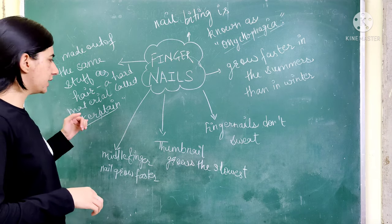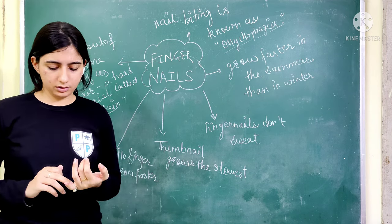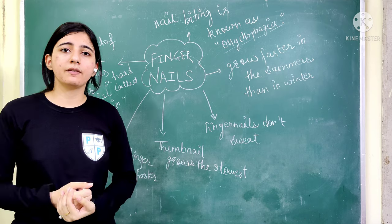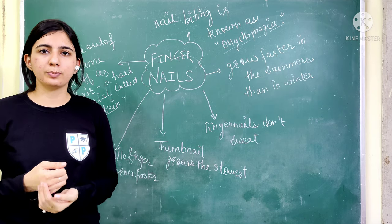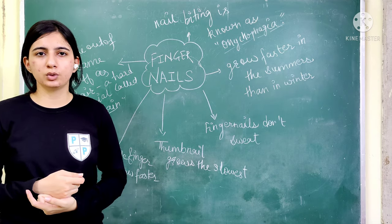After that, we have keratin. Nails and hairs, which are made from birds, the beaks and feathers are made from this material.